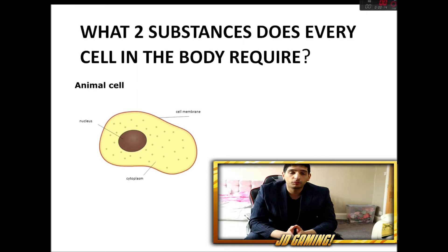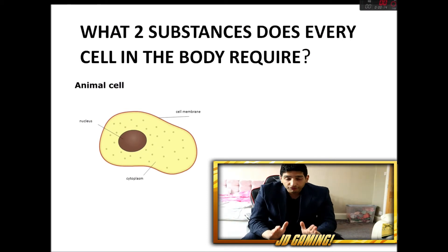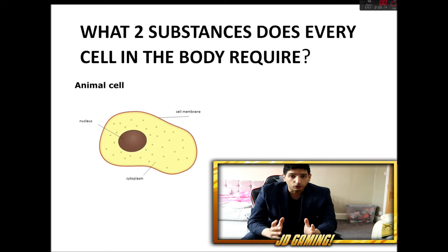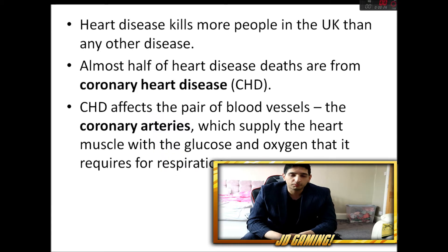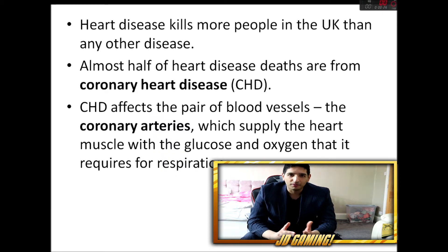Today I'm going to be explaining why stents are used. The first thing you need to understand is that glucose and oxygen are required by your heart — required by all your cells — so your cells need to respire. Glucose and oxygen are carried by the blood.